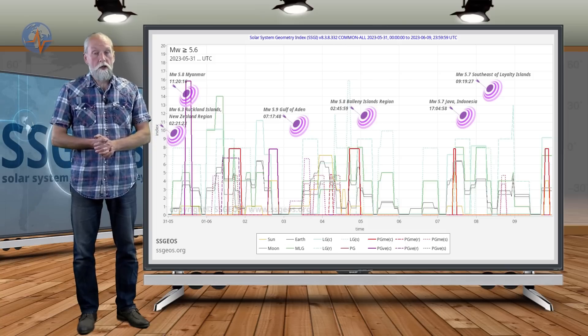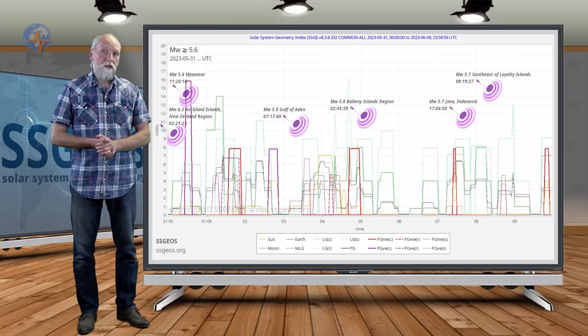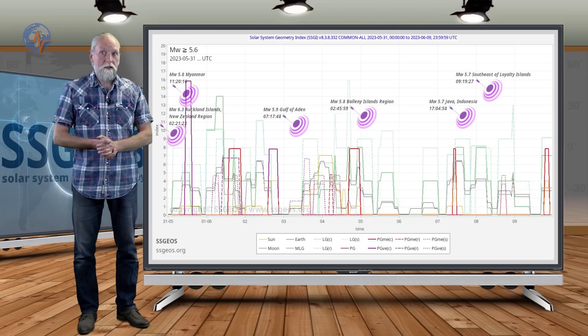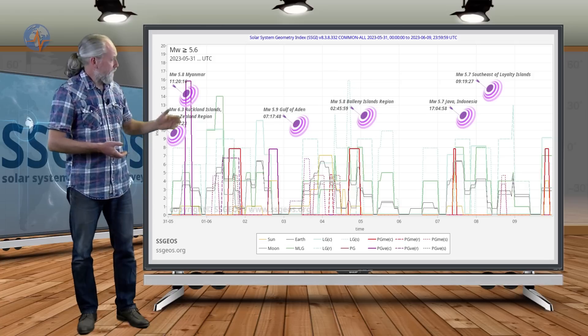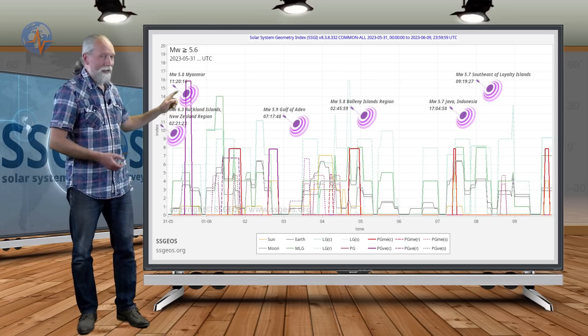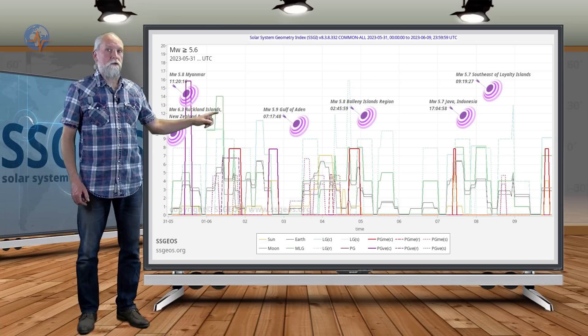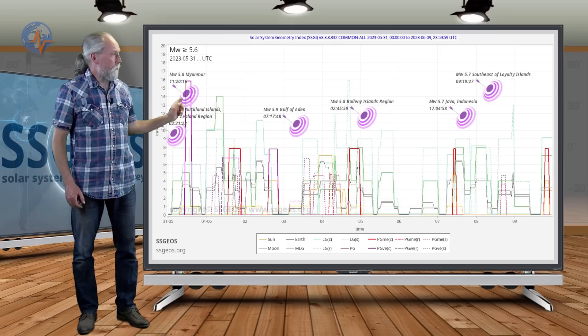And this is interesting because if we look at the averages we see that magnitude 6 earthquakes occur about every 2.7 days. And so far for about 8 days now, no magnitude 6 earthquake. Very interesting.